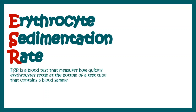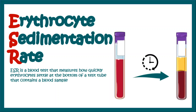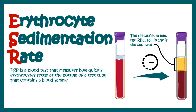ESR is a test of blood that measures how quickly the erythrocytes, that is the red blood cells, settle at the bottom of a test tube that contains a blood sample. If you take some blood in an anticoagulant-added tube and wait for some time, you will see that the RBCs will settle down at the bottom. The distance in millimeters of RBC fall in one hour is the sedimentation rate.